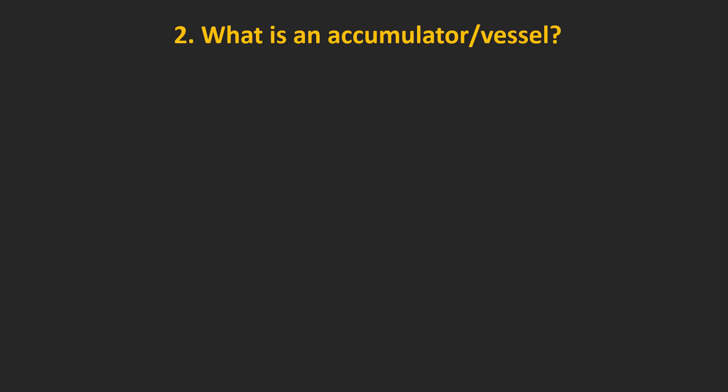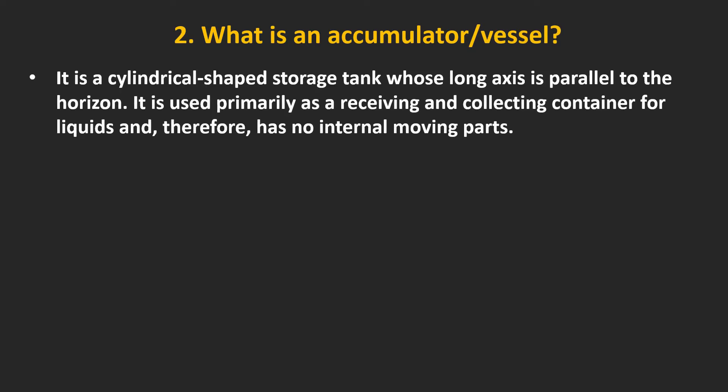What is an accumulator or vessel? It is a cylindrical shaped storage tank whose long axis is parallel to the horizon. It is used primarily as a receiving and collecting container for liquids and therefore has no internal moving parts.